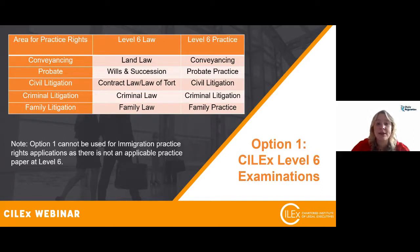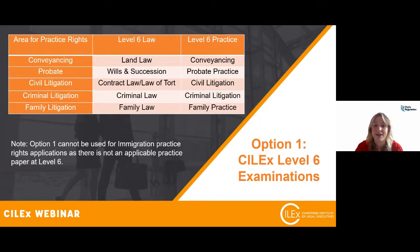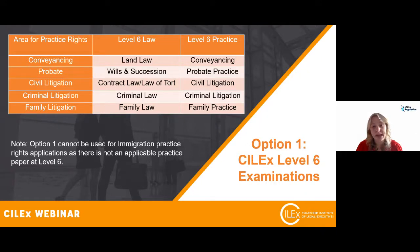As shown in the table: for conveyancing you need land law and conveyancing papers; for probate, wills and succession and probate practice; for civil litigation, contract law or tort with civil litigation; for criminal litigation, criminal law and criminal litigation; and for family litigation, family law and family practice. Immigration is not included in option one — there's no equivalent level six practice paper to match with immigration law.